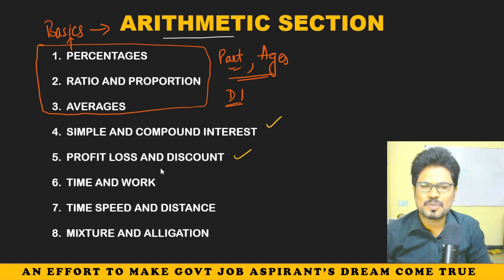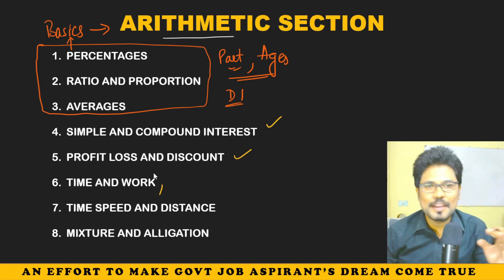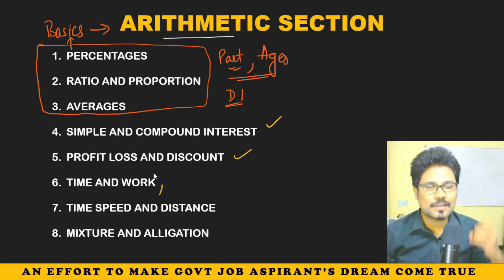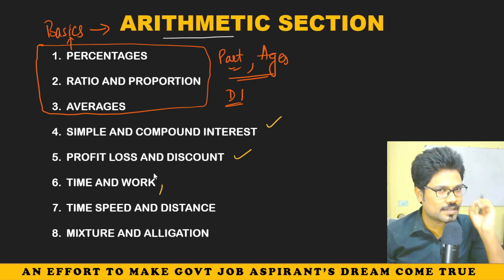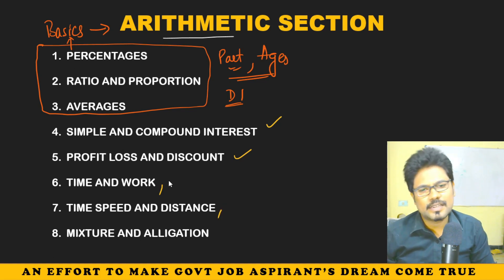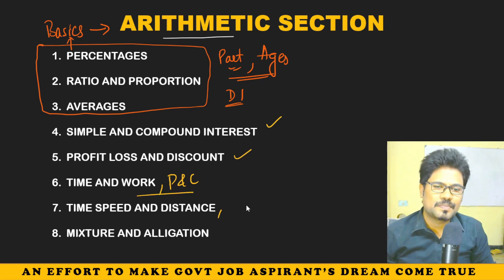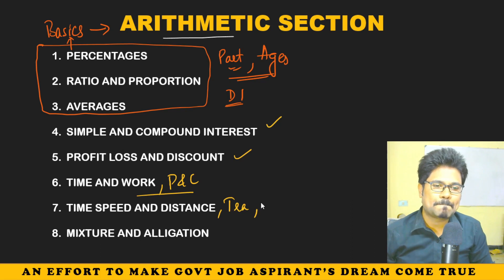Data Interpretation — and that's it. We start with Simple Interest, Profit, Loss and Discount. Believe me, I will make your life easy with the Maths section. Time Speed and Distance, Time and Work, Pipes and Systems — same concepts. Time Speed and Distance also covers Trains, Races, and Boats and Streams.